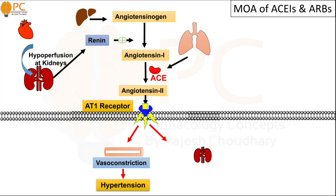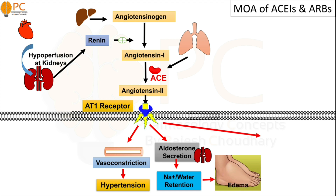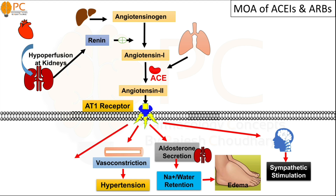In the kidney, AT1 receptor activation increases the release of aldosterone, causing sodium and water retention, which can produce peripheral edema. In the central nervous system, it activates the sympathetic system and increases sympathetic outflow.